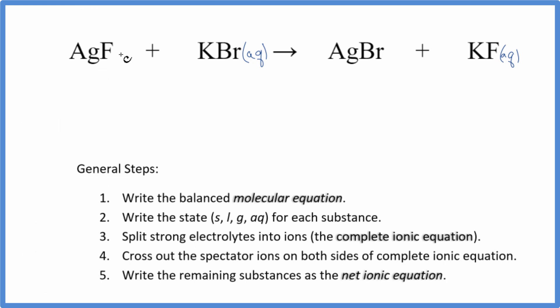We said silver fluoride is soluble. It's going to be aqueous, dissolve, and dissociate into its ions. Silver bromide, that's going to be insoluble, so it'll be a solid. Put a little S there. It's going to fall to the bottom of the test tube. This is a precipitation reaction.